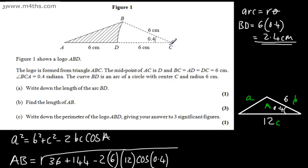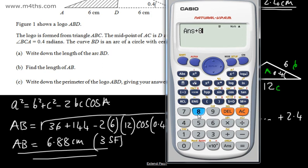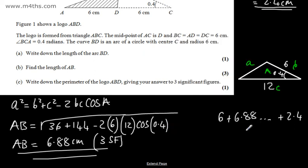All we need is A to B to D. We can see that A to B is what we've just found. We've got A to D which is 6, and we've worked out BD is 2.4. So we're going to have 6 plus 6.88 plus 2.4. Adding 8.4 to this gives us 15.28. So 15.3 centimeters to 3 significant figures.